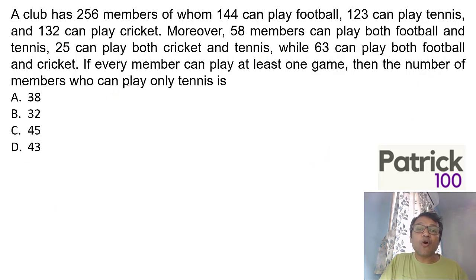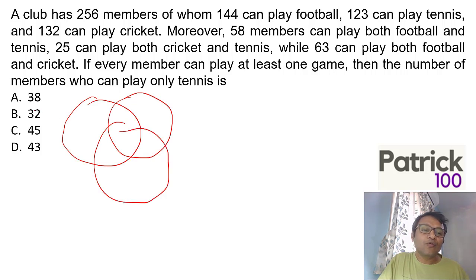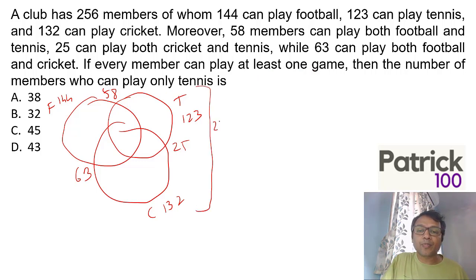A club has 256 members of whom 144 can play football. This is a Venn diagram. You can draw: football 144, tennis 123, cricket 132. 58 members play football and tennis, 25 play cricket and tennis, and 60 play football and cricket. Every member can play at least one game, so total 256 in the whole Venn diagram.